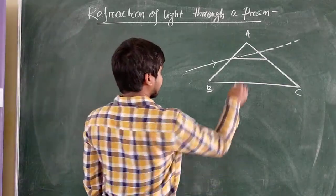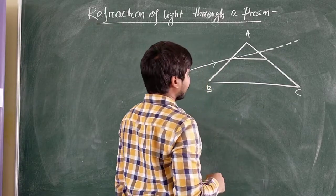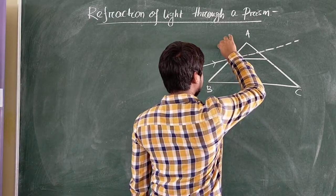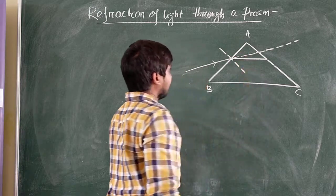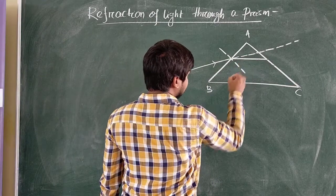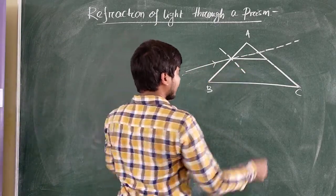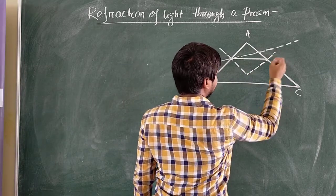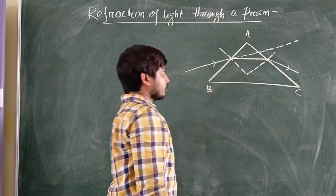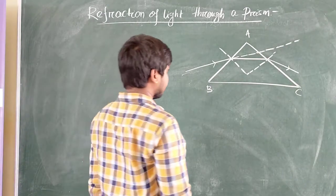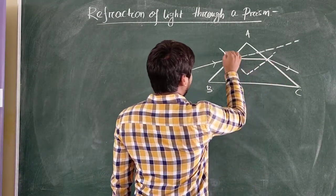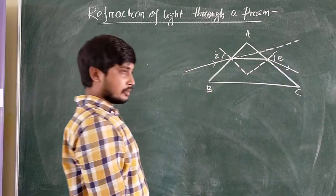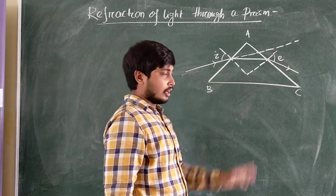But due to the presence of the prism, the light is deviated. After refracting from the face AB, the light is now incident on the face AC. You can draw the normal on face AB — the light is bent towards the normal because it is traveling from the rarer to the denser medium. Similarly, drawing the normal on face AC, the light moves away from the normal because it is moving from the denser to the rarer medium. This angle is the angle of incidence I, and this one is the angle of emergence E.